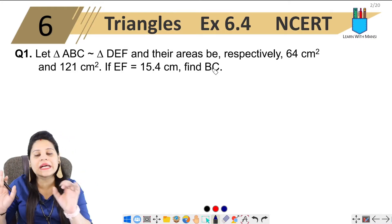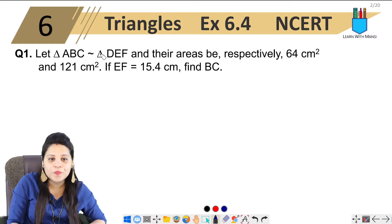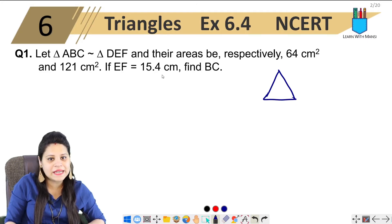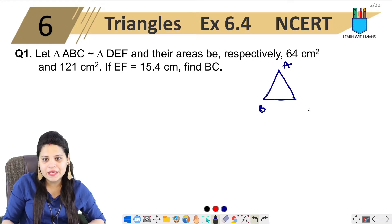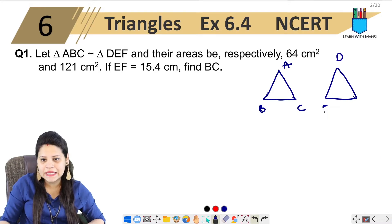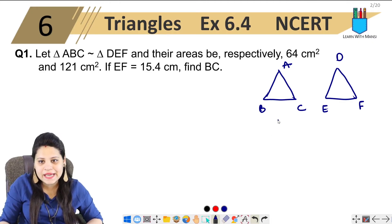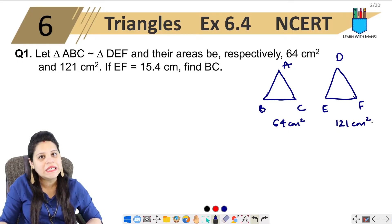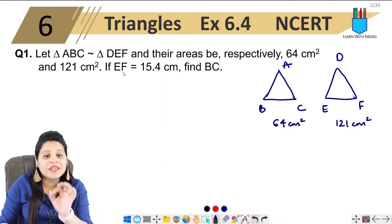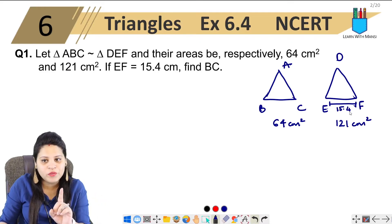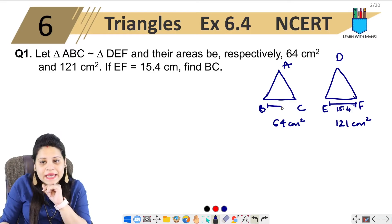First of all, we have two similar triangles. One triangle is called ABC and the second triangle is DEF. The area of triangle ABC is 64 cm square and the area of triangle DEF is 121 cm square. EF equals 15.4 cm, and we have to find BC.